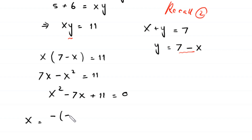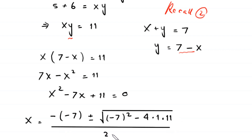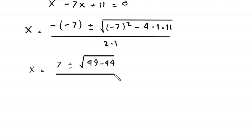According to the quadratic formula, x equals negative b plus or minus the square root of (b squared minus 4ac), all over 2a. Here b is negative 7, a is 1, and c is 11. So x equals 7 plus or minus the square root of (49 minus 44), divided by 2. That gives x equals 7 plus or minus the square root of 5, divided by 2.